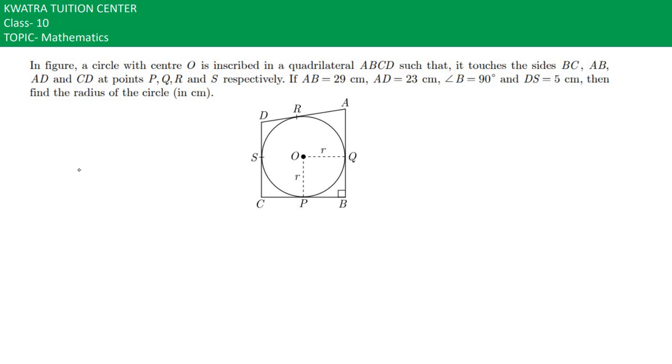Let's start with this question. Here it says in figure a circle with center O is inscribed in a quadrilateral ABCD such that it touches the side BC, AB, AD and CD at points P, Q, R, S respectively.